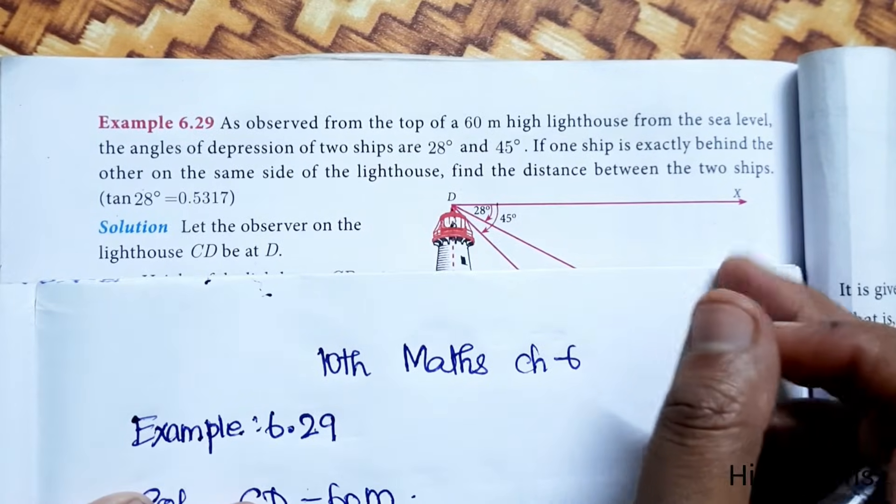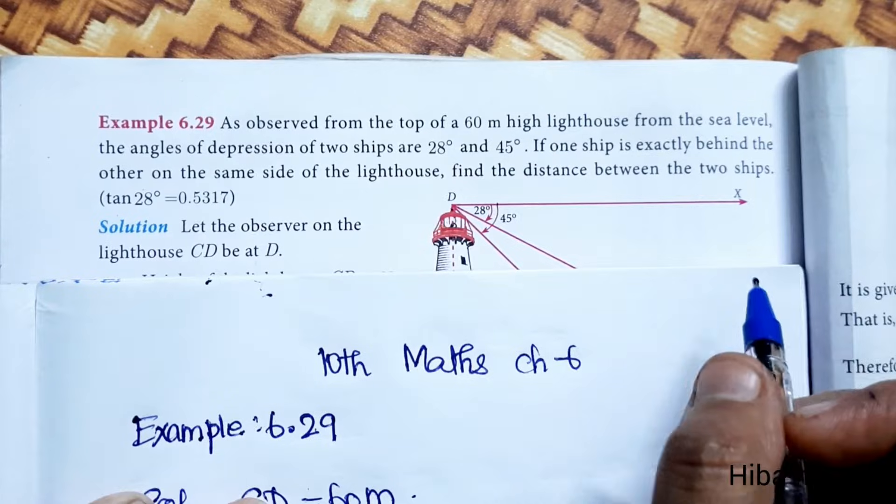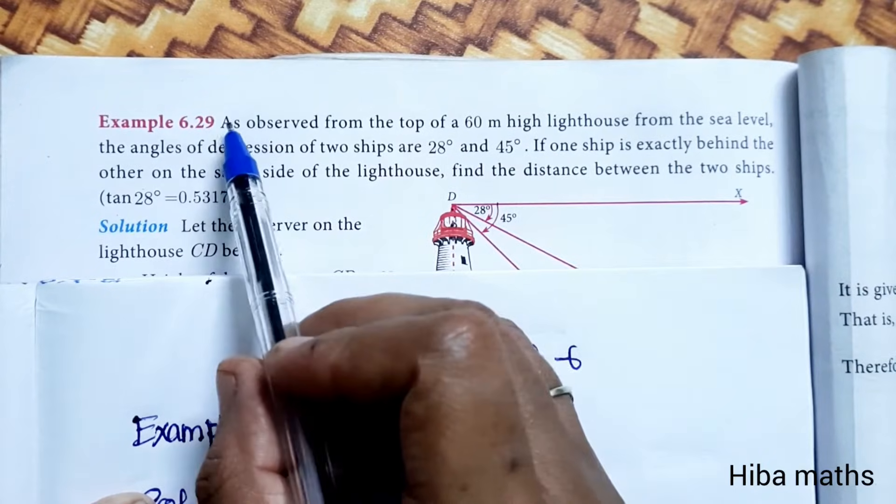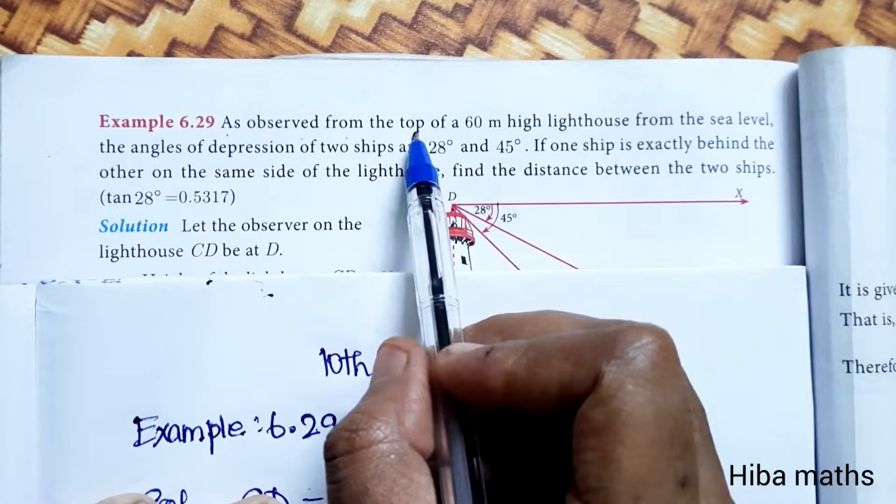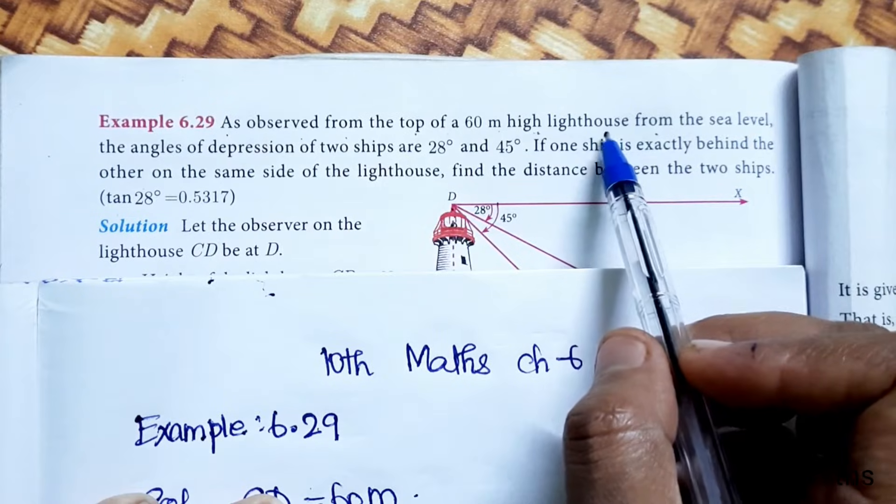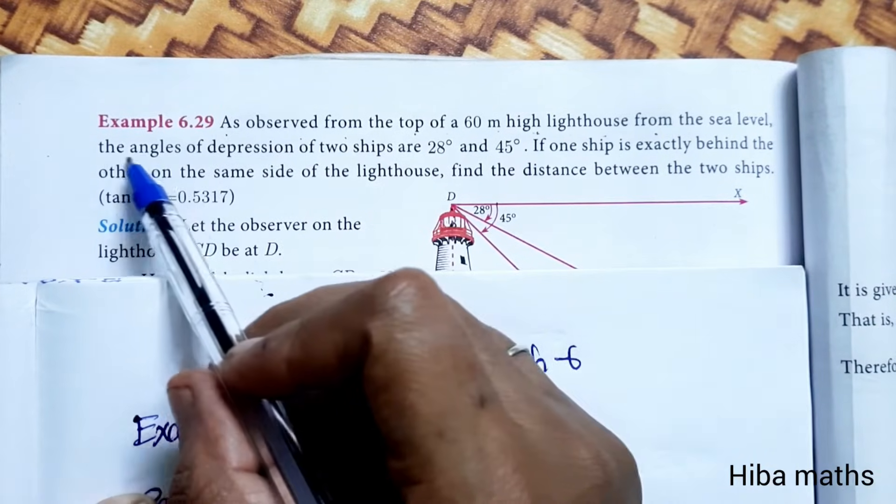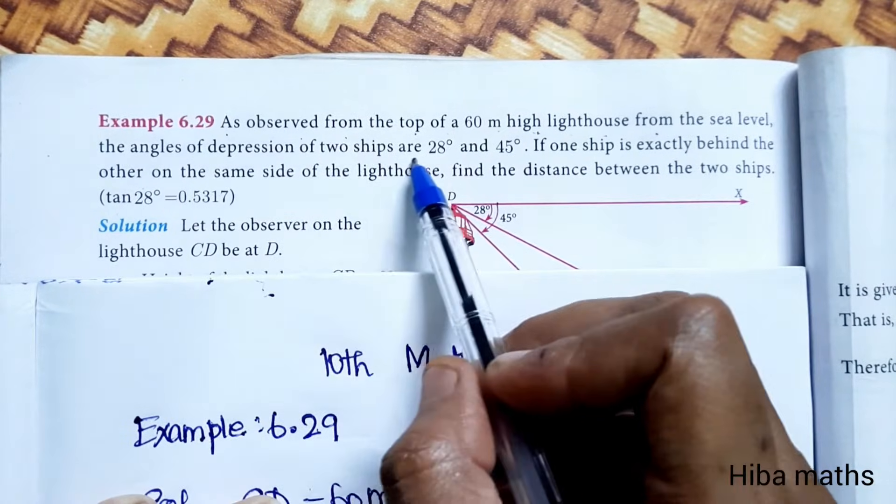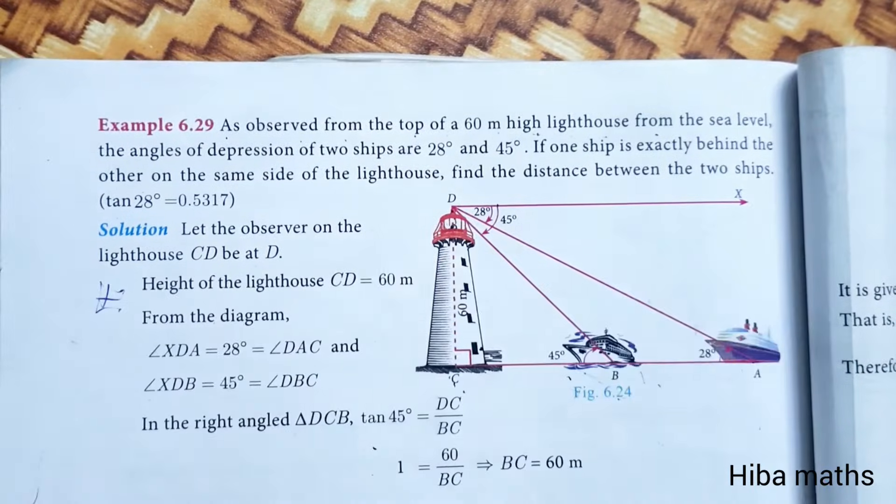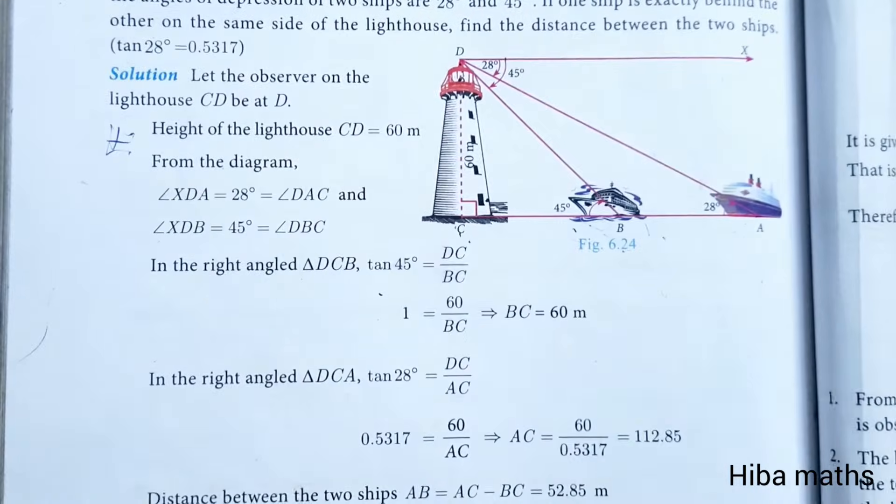Hello students, welcome to Hiba Maths 10th Standard Maths Chapter 6 Example 6.29. As observed from the top of a 60 meter high lighthouse from sea level, the angle of depression of two ships are 28 degrees and 45 degrees. Diagram is clear.